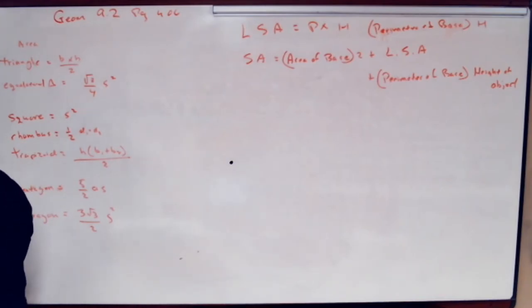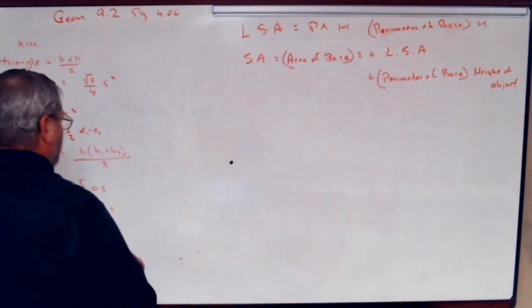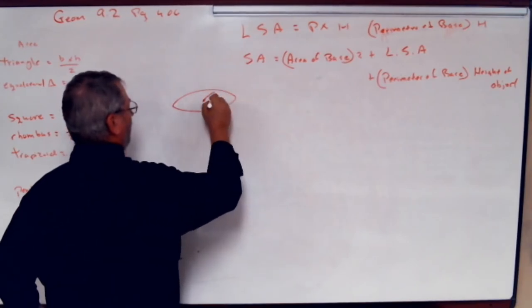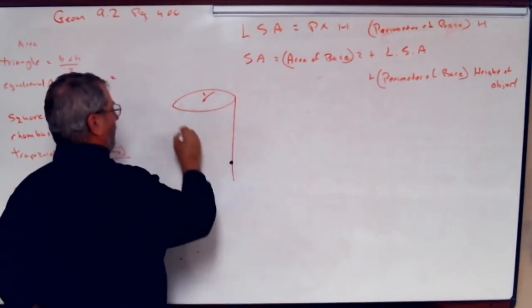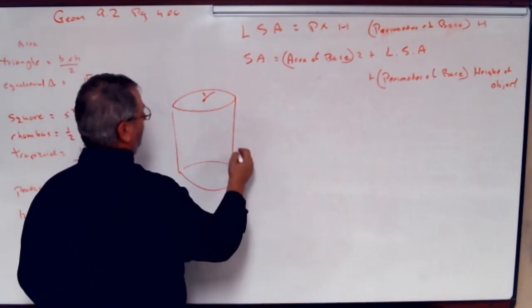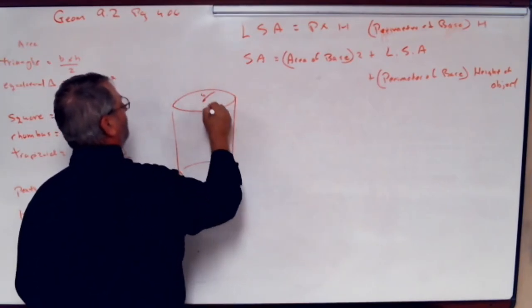So what you're going to do here is like if you want to find the surface area of a right circular cylinder, I'm not going to do many of these. You guys should be pretty good at it by now. Just remember what you're doing. So if this is a, I don't know, if that's a four, we'll make this a ten.